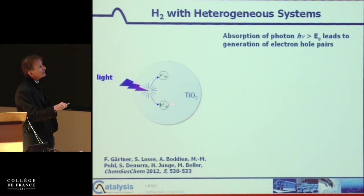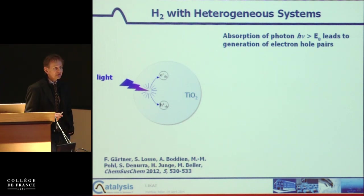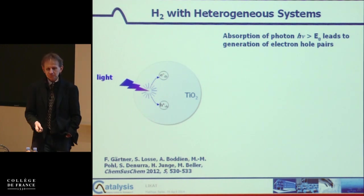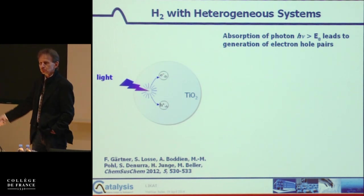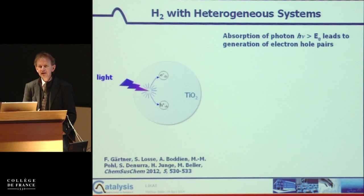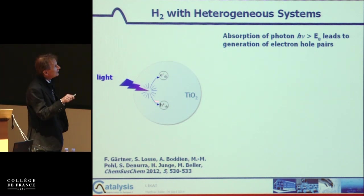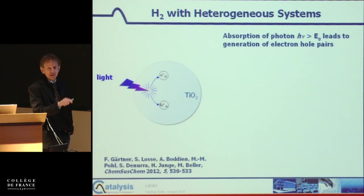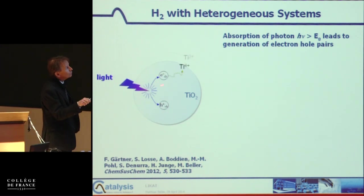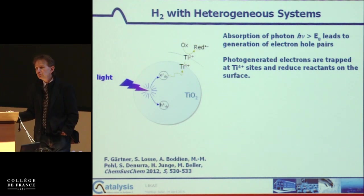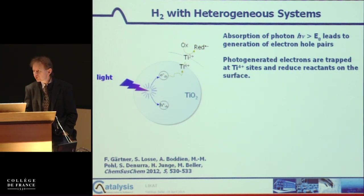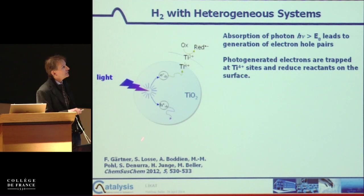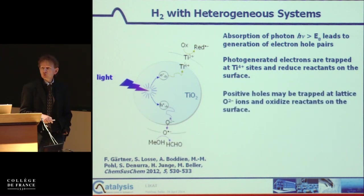You all might know titanium dioxide — they are small white particles often found in white paint used for painting rooms. If you irradiate them with the UV part, these particles generate a hole and an electron. This electron can then be used for reducing protons, reducing carbon dioxide, and the hole is used for an oxidation process.